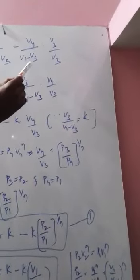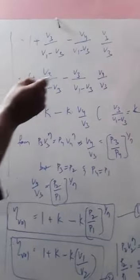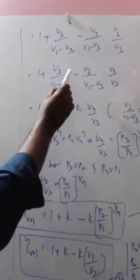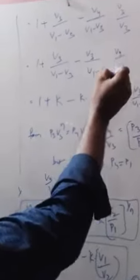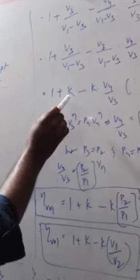The remainder we get is 1 plus V3 by (V1 minus V3). Here, I am dividing and multiplying this expression by V3, and writing 1 plus V3 by (V1 minus V3) minus, then placing V3 in the denominator along with V1 minus V3, giving us V4 by V3.